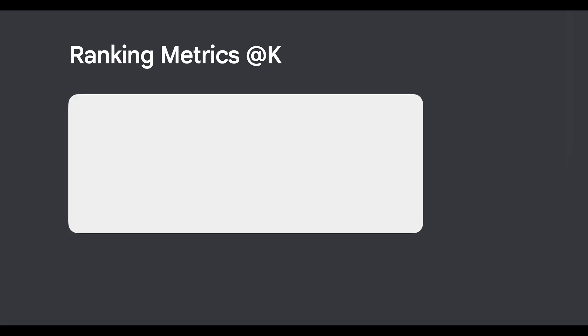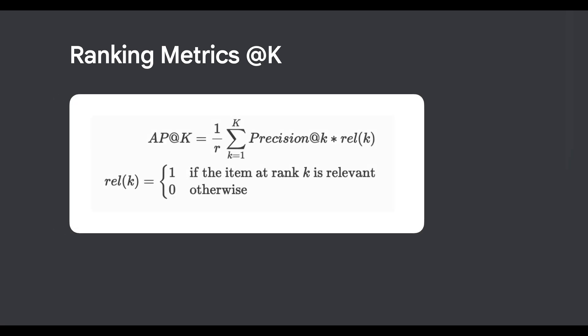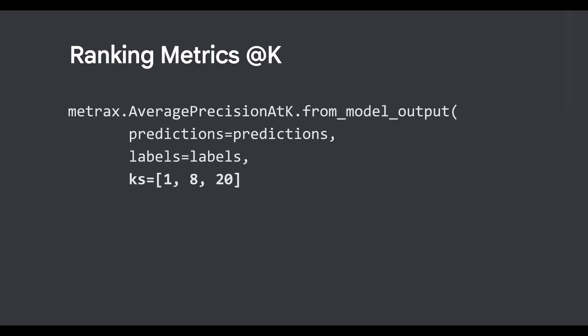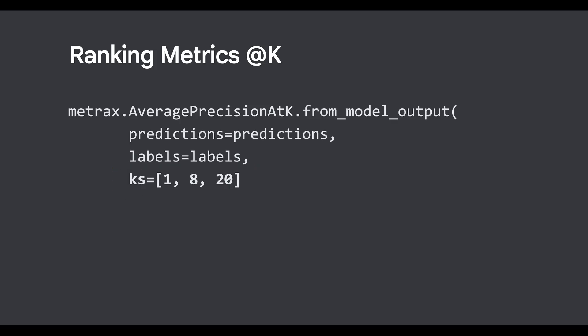First up, let's check out the ranking metrics at K — a personal favorite. Metrax has the ability to compute at-K metrics for multiple values of K in parallel. This allows for a much more comprehensive and efficient evaluation of your ranking model's performance. For instance, you can compute precision at K or recall at K for several different K values — like K equals 1, K equals 8, K equals 20 — all in a single forward pass, saving considerable time and computational resources compared to running separate computations for each value of K.